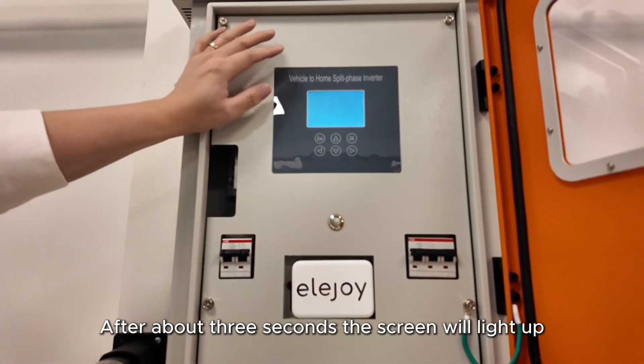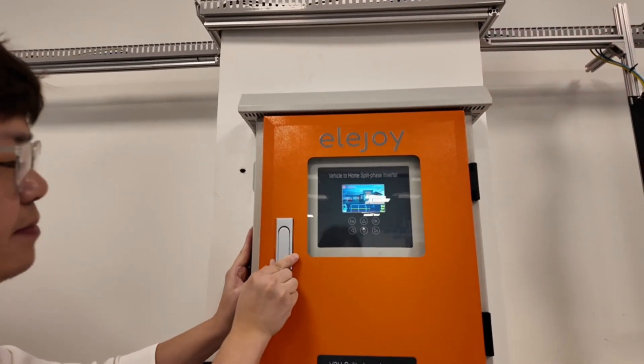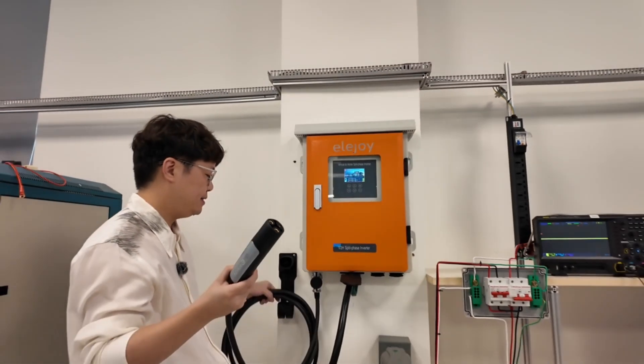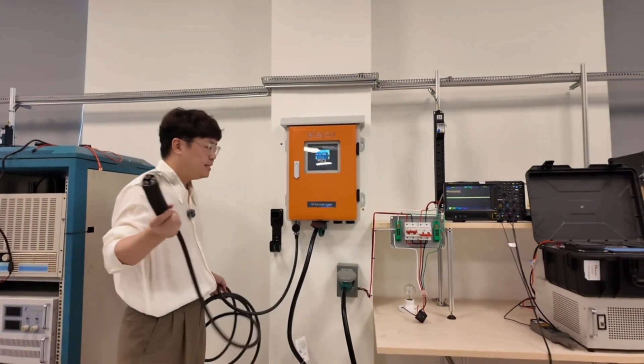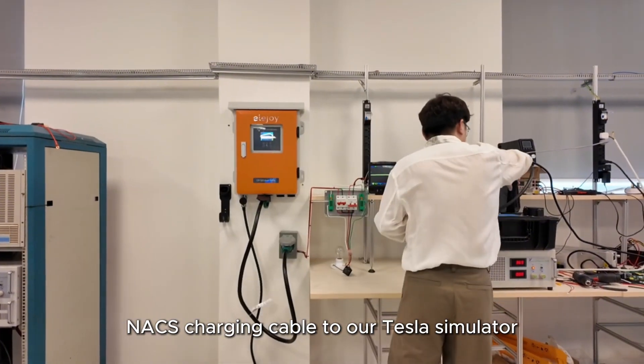After about three seconds, the screen will light up. Once the screen lights up, we close the door. Then we take out the charging cable. Next, we connect our ACS charging cable to our Tesla simulator.